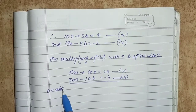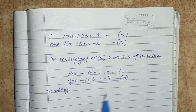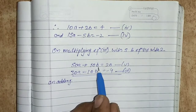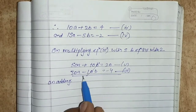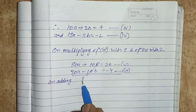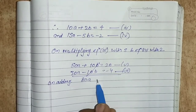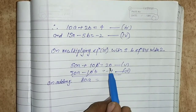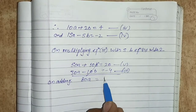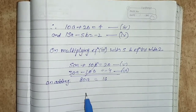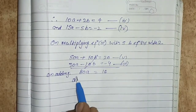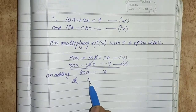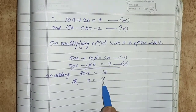On adding equations 5 and 6, the b terms cancel. We get 80a equals to 16. So a equals to 16 upon 80, which simplifies to 1 by 5.